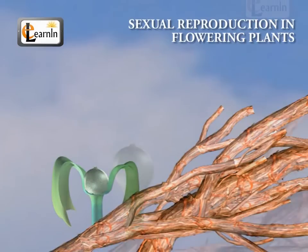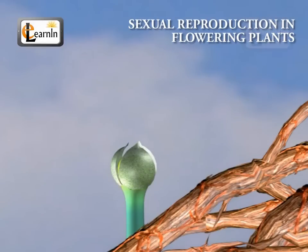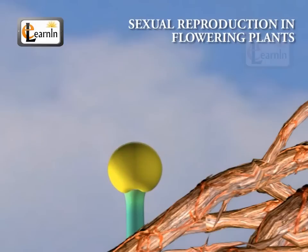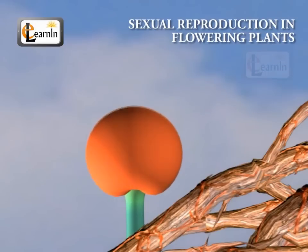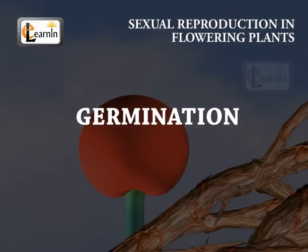This is the reason why, at times, flower parts still persist within a fruit. The seed contains the future plant, or embryo, which develops into a seedling under appropriate conditions. This process is known as germination.